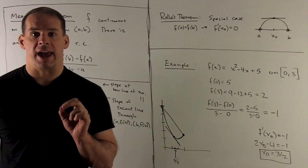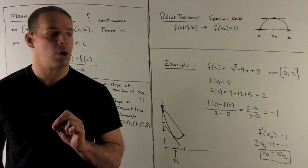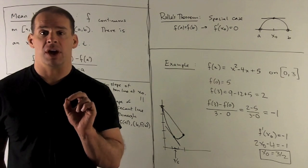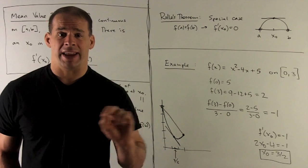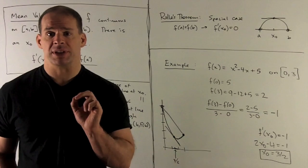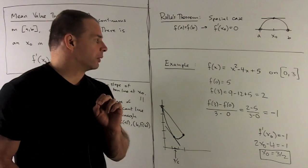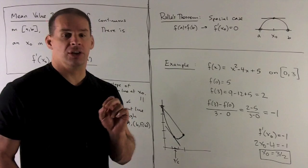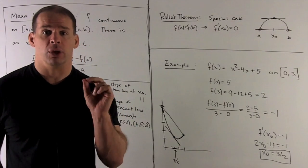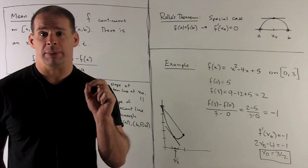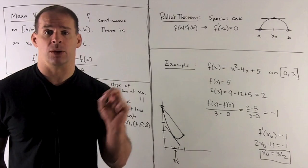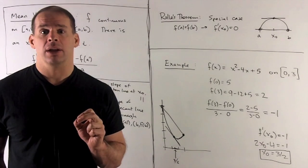Let's look at an example: f(x) = x² - 4x + 5 on the interval [0, 3]. This is definitely differentiable on the interval, so the Mean Value Theorem applies. First, let's find the slope of the secant line by evaluating at 0 and 3: we get (2 - 5) / (3 - 0) = -1. So we're looking for a point where the derivative equals -1. The derivative is 2x - 4; setting that equal to -1 and solving gives x₀ = 3/2.